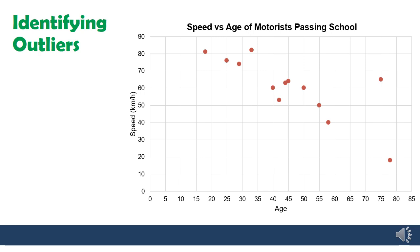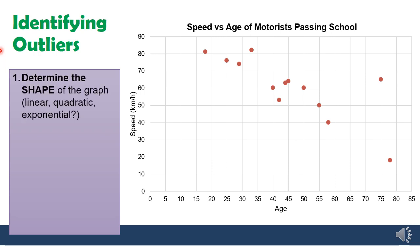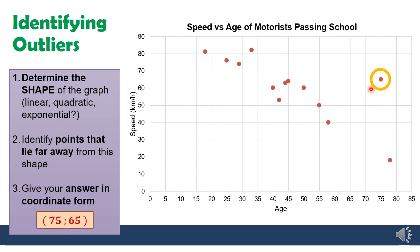From my scatter plot, I now need to identify outliers. Before I can do that, I need to figure out the shape of the graph — is it linear, quadratic, or exponential? Looking at this graph, I can see that most of the data lies in a roughly straight line, so this is a linear pattern. Once I've identified that it's linear, I look for anything that lies far away from my roughly straight line. I can see one coordinate that lies far away — that's an extreme value, my outlier. I give my answer in coordinate form, going back to the data table if needed. That coordinate is 75, 65 — a 75-year-old speed demon going 65 past the school gate, while most older people are going slower.